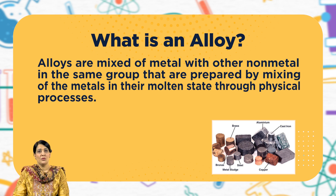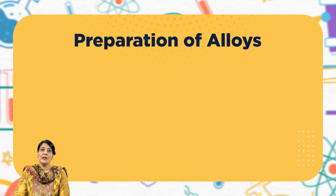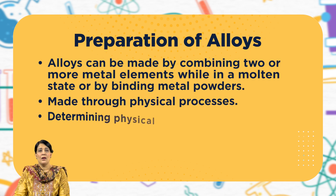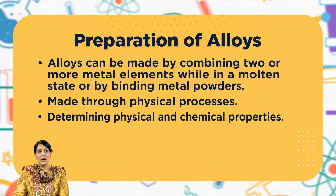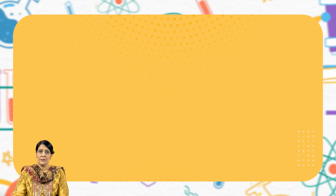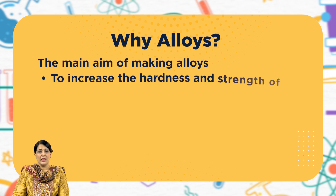Alloys can be made by combining two or more metal elements while in a molten state, and they are made through a physical process. They determine the physical and chemical properties of their reactants.